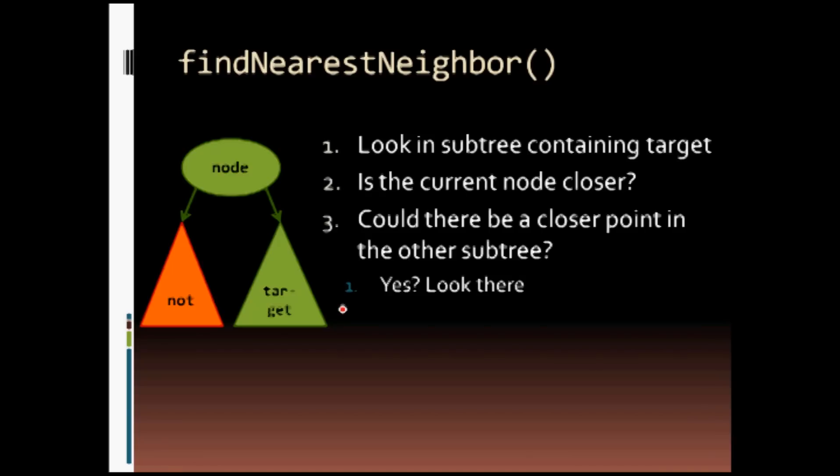So if there could be a closer point, we look there. If there couldn't, then we are done with this recursive function, and we leave it.